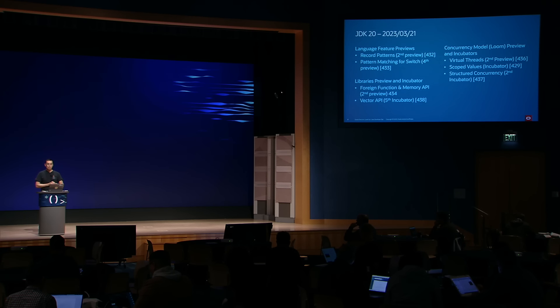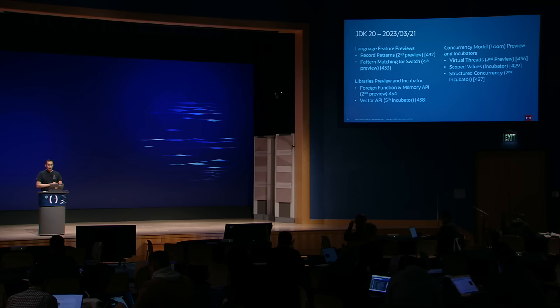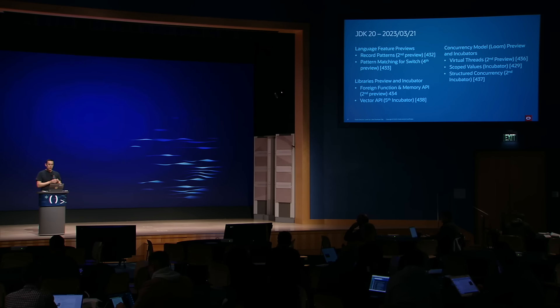We've grouped the JEPs in this release into three parts: the language features, which come from Project Amber; library improvements, which come from Project Panama; and three improvements from Project Loom, which aim to update how Java manages concurrency. So let's dive right into those.